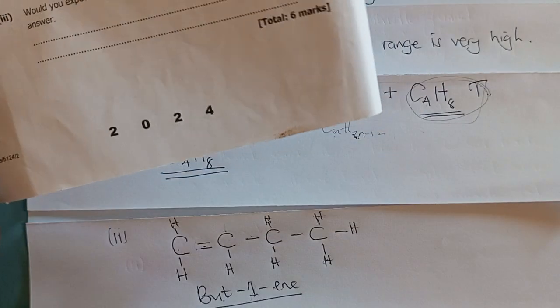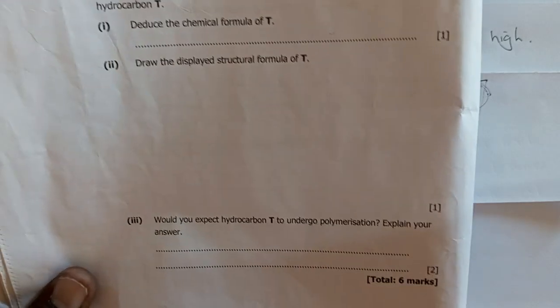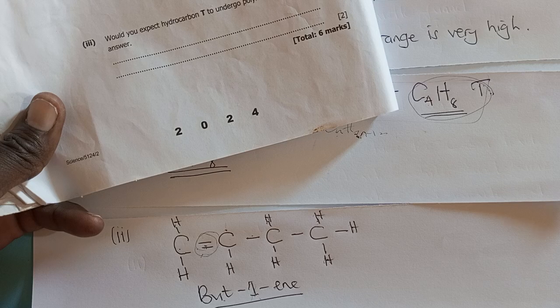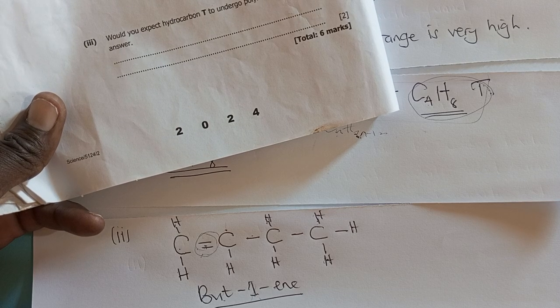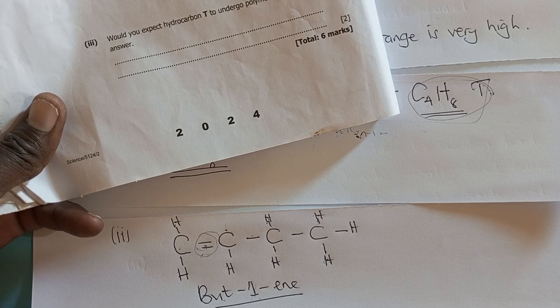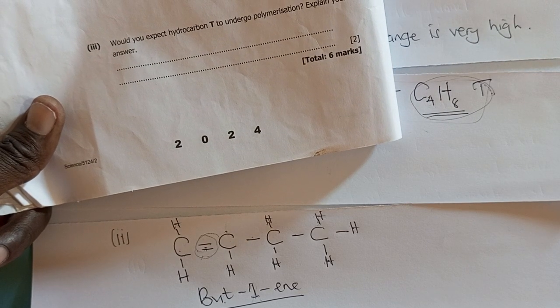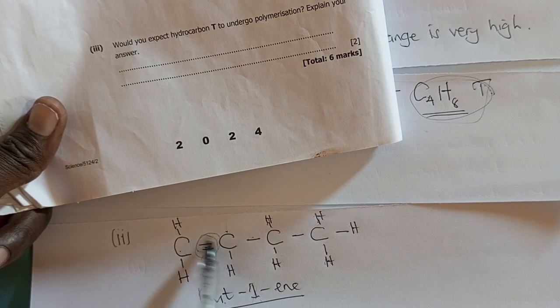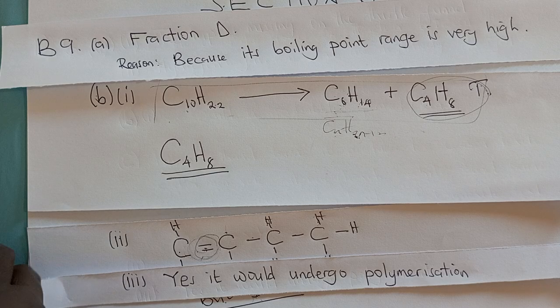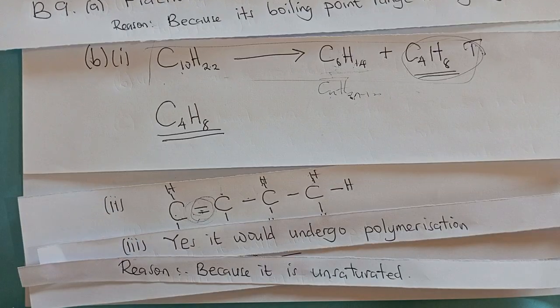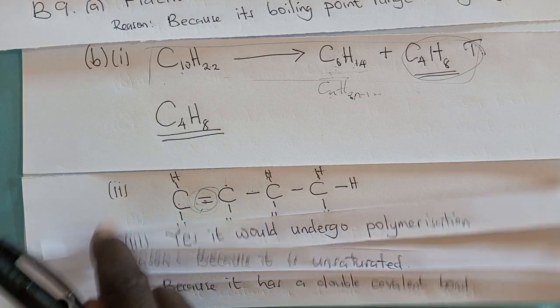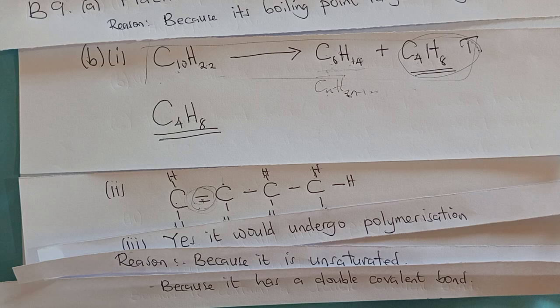The next question asks: would you expect hydrocarbon T, butene, to undergo polymerization? Yes. Why? Because there is a double bond in it — a double covalent bond — so it would undergo polymerization. The answer is yes, it would undergo polymerization because it is unsaturated, meaning it has a double covalent bond. You can say either 'it is unsaturated' or 'it has a double covalent bond' as your justification.